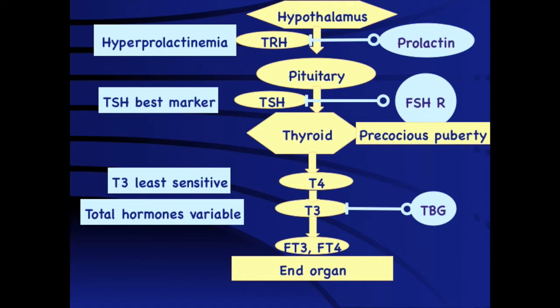Uncontrolled primary hypothyroidism will result in significant elevation of TSH and thyrotroph hyperplasia, which may go to the extent of being diagnosed as a pituitary mass — when in fact it is diffuse thyrotroph hyperplasia. Once these children are put on thyroid hormone, the pituitary hyperplasia subsides and the size of the pituitary gland comes down. So if TSH levels are very high and there appears to be a TSH-secreting lesion, start thyroxine replacement and the child will improve both clinically and on neuroimaging.